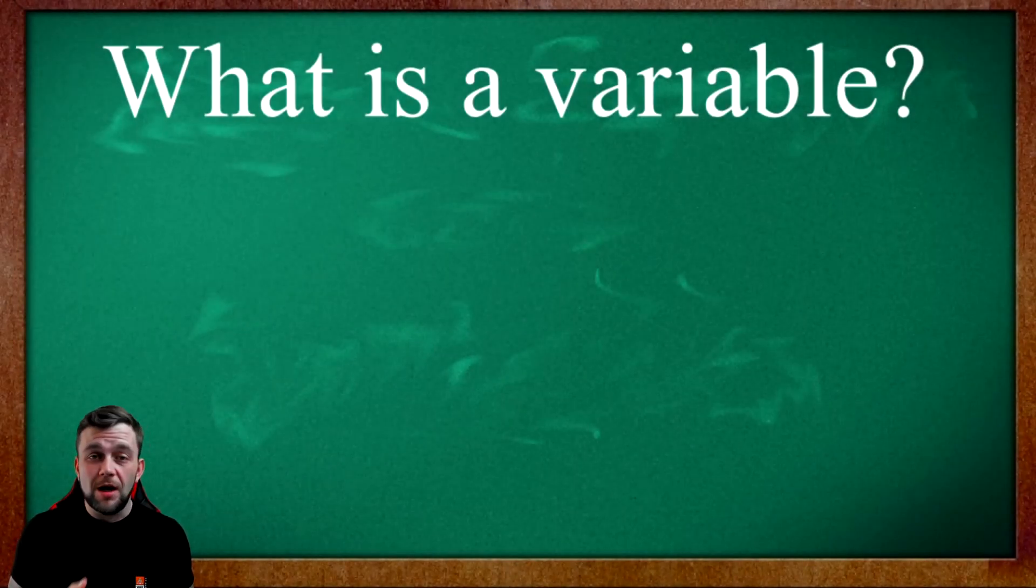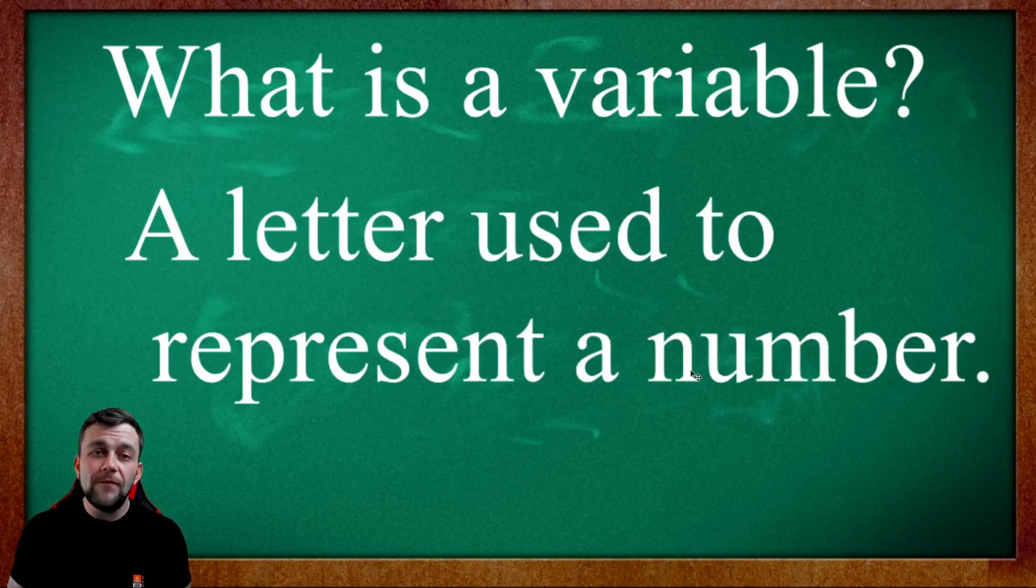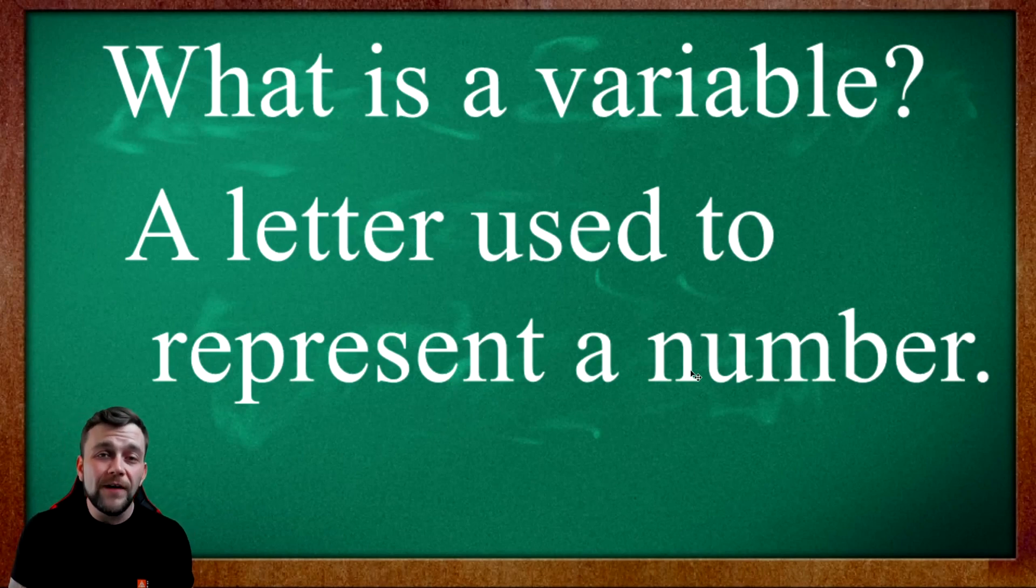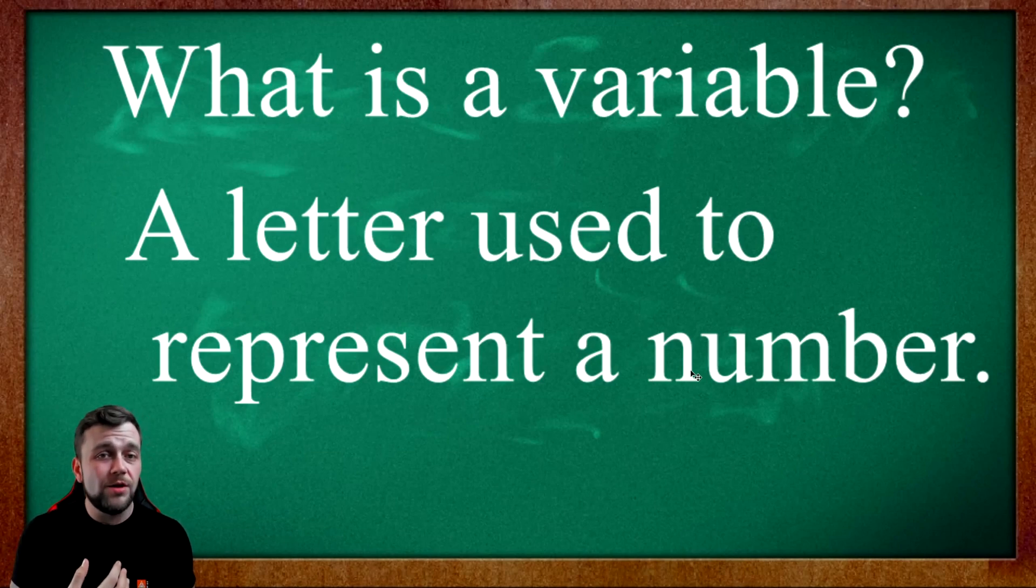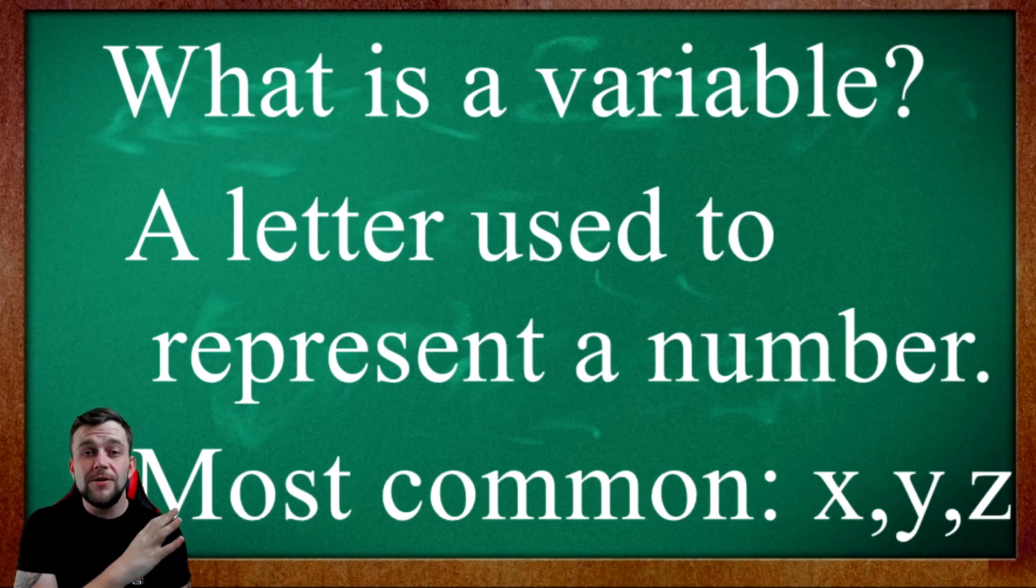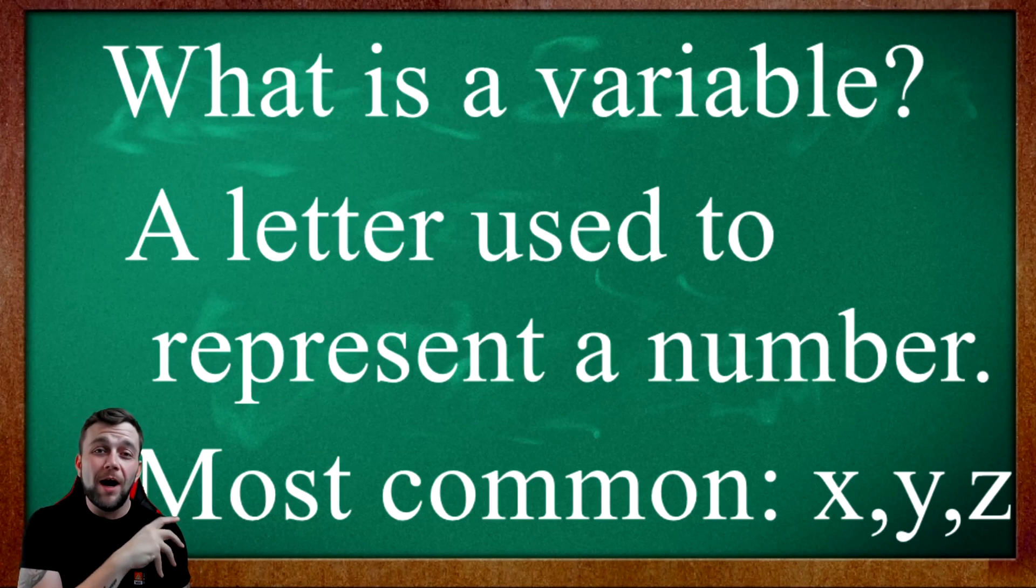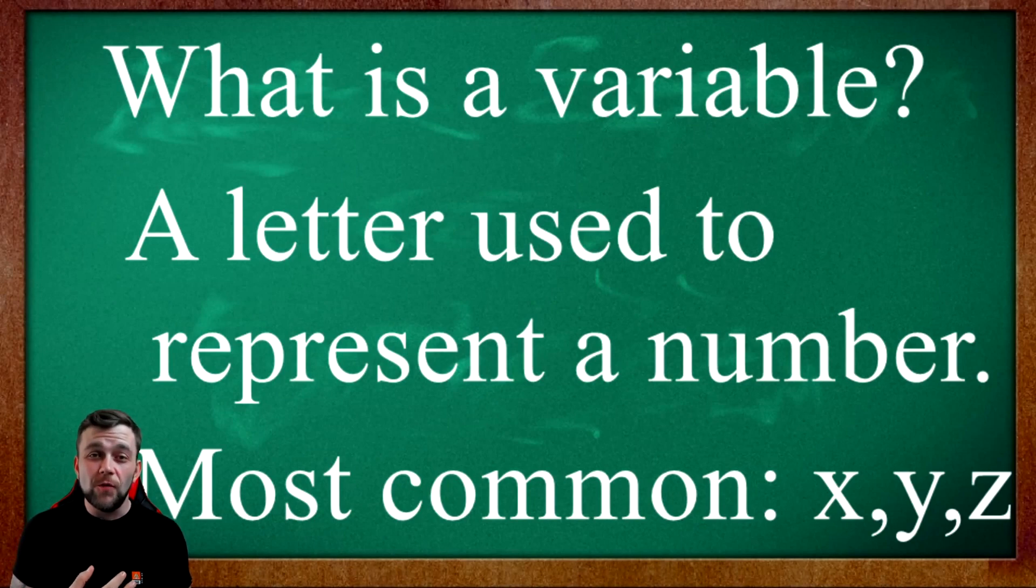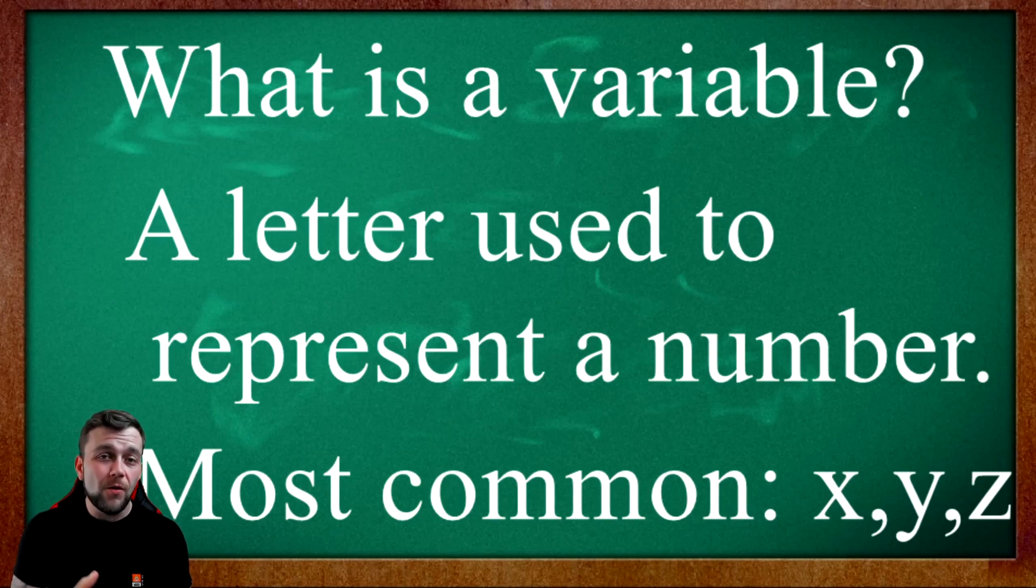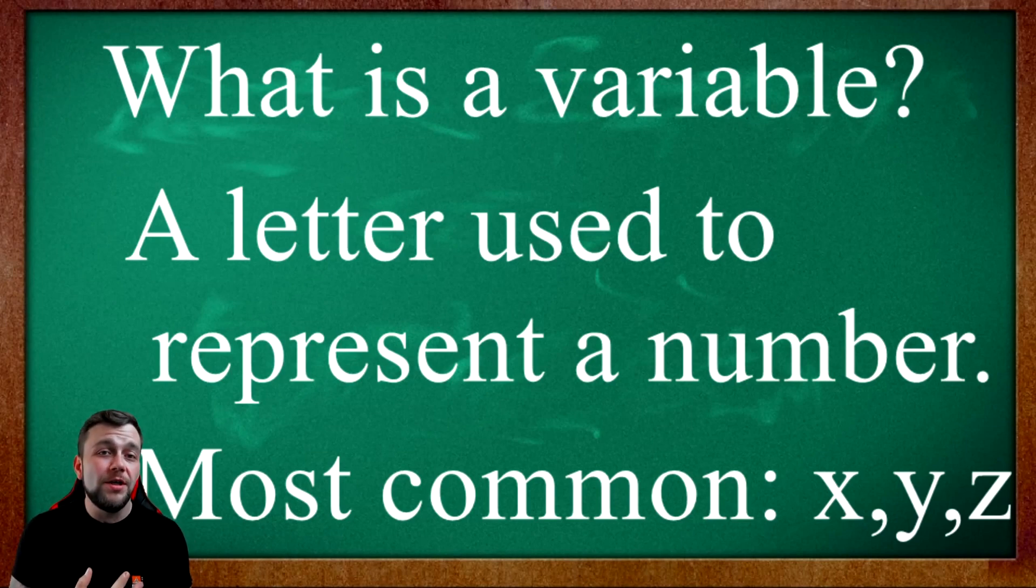The very first thing that we need to define when talking about algebraic expressions and variables is, what is a variable? The definition of a variable is very straightforward. It is a letter used to represent a number. The variable is the placeholder for a number. Those are the main things that you want to remember. The most common letters that they use for variables are X, Y, and Z. I strongly encourage you to take a screenshot if you're watching this video from the phone, because you do want to remember the definitions.